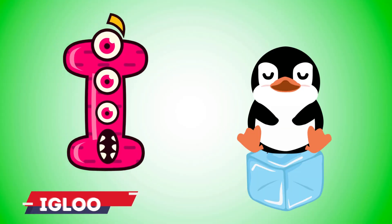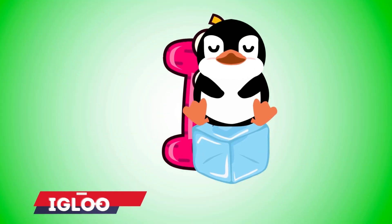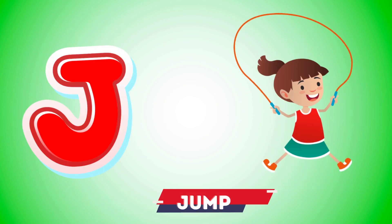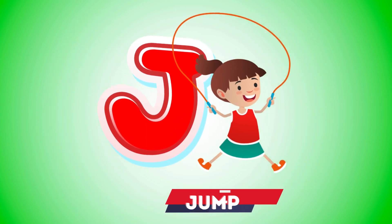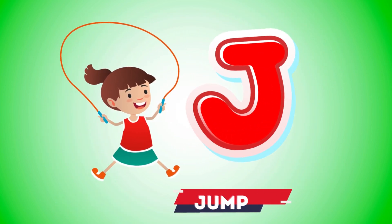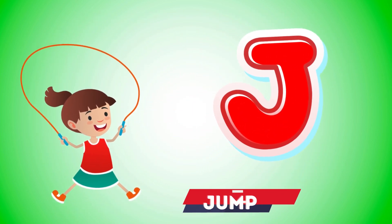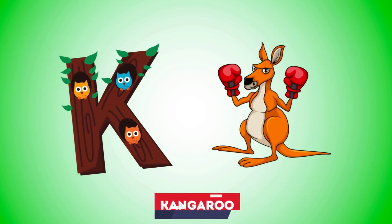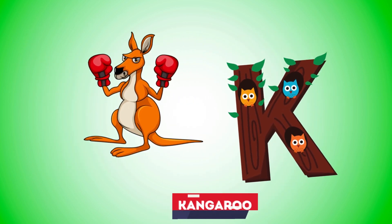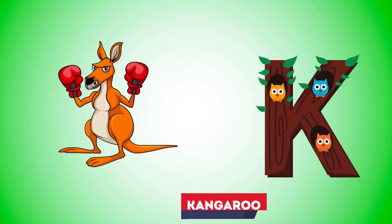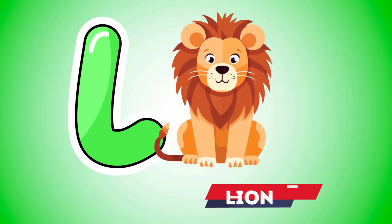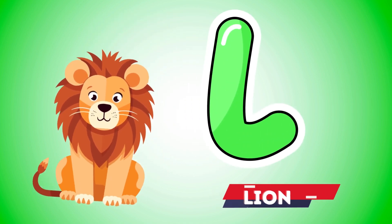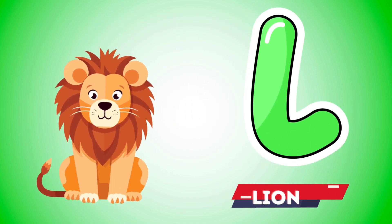I is for igloo, i-i-igloo. J is for jump, j-j-jump. K is for kangaroo, k-k-kangaroo. L is for lion, l-l-lion.